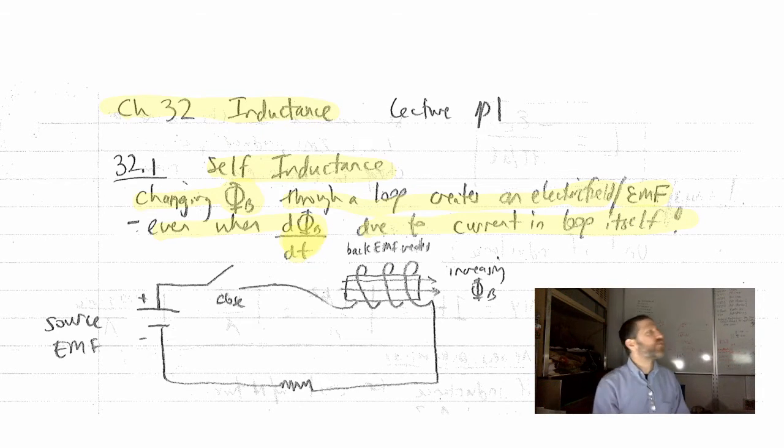You don't need an external magnet or a separate coil to get a changing magnetic flux. This coil that's right here, if you turn on and off the current in that coil, first of all, will you get a magnetic field in the coil if you turn on current? Yes, in fact,